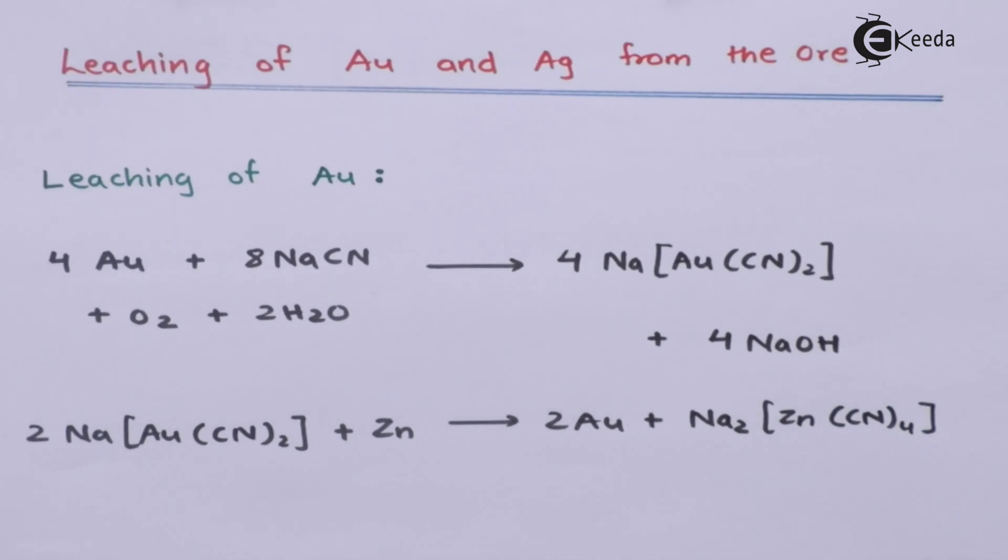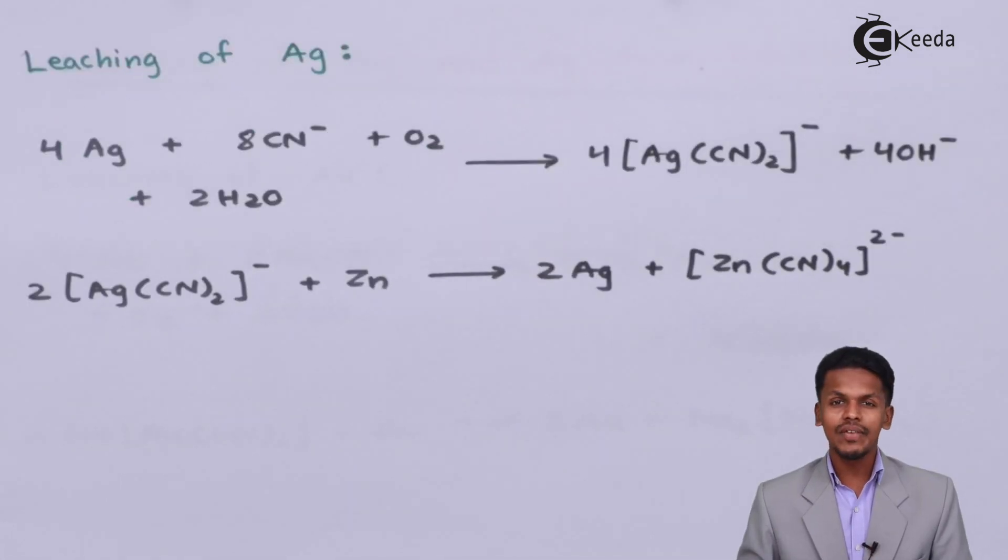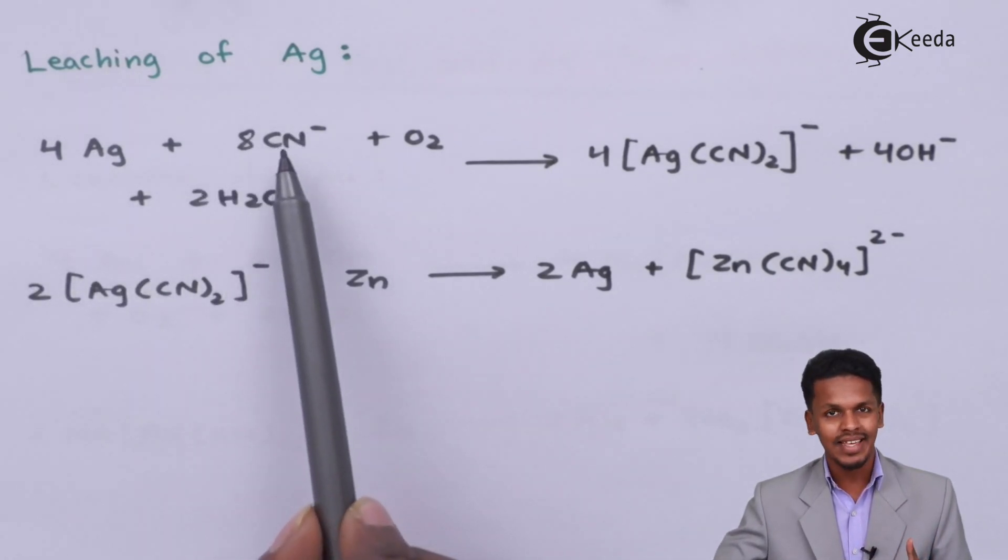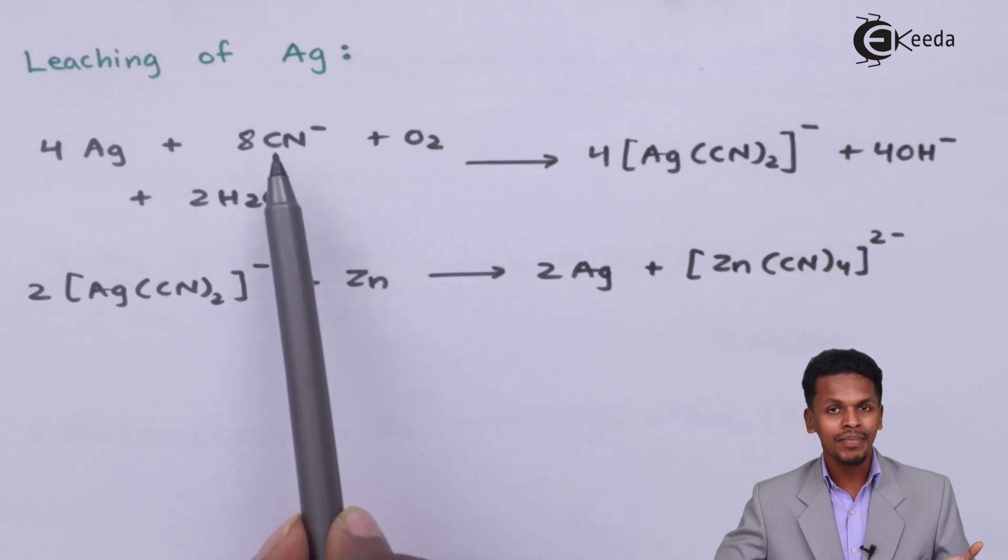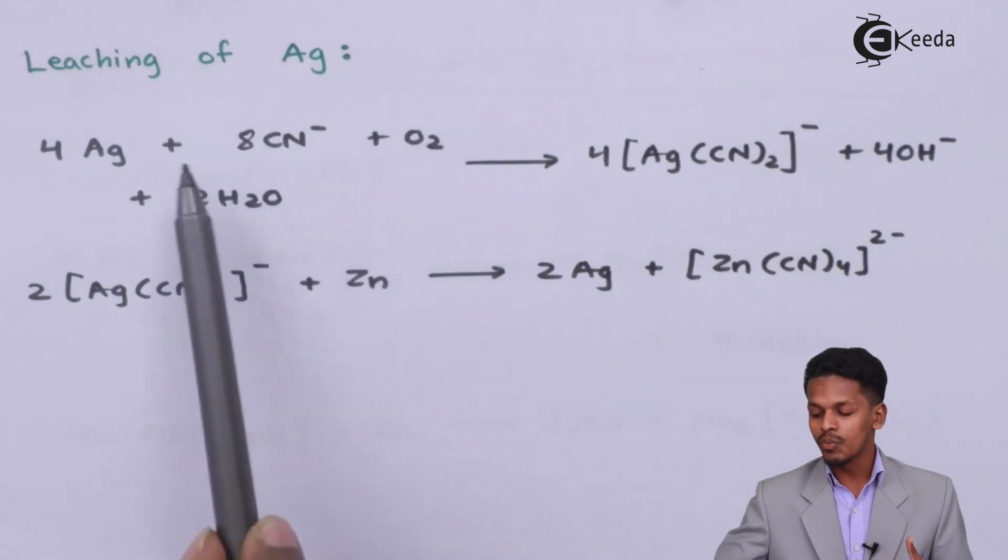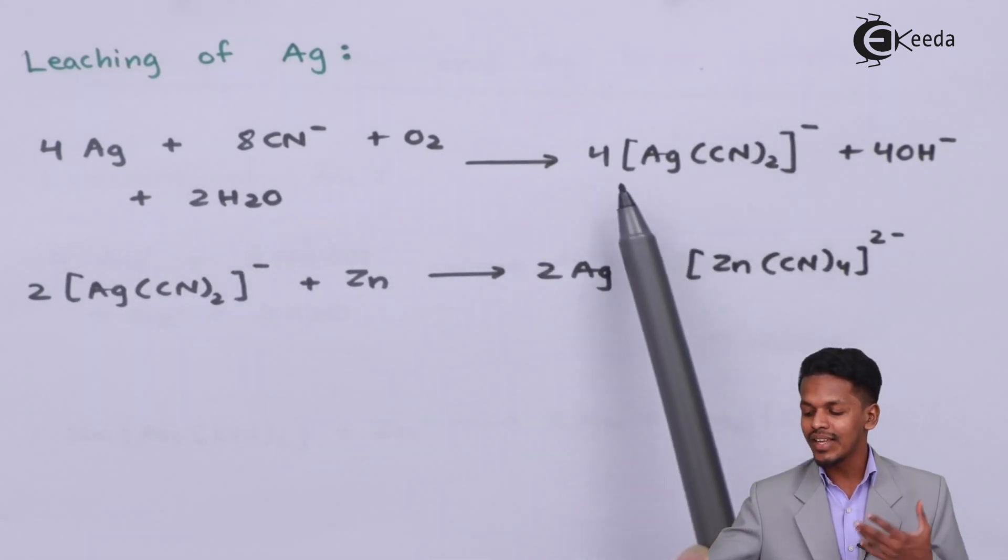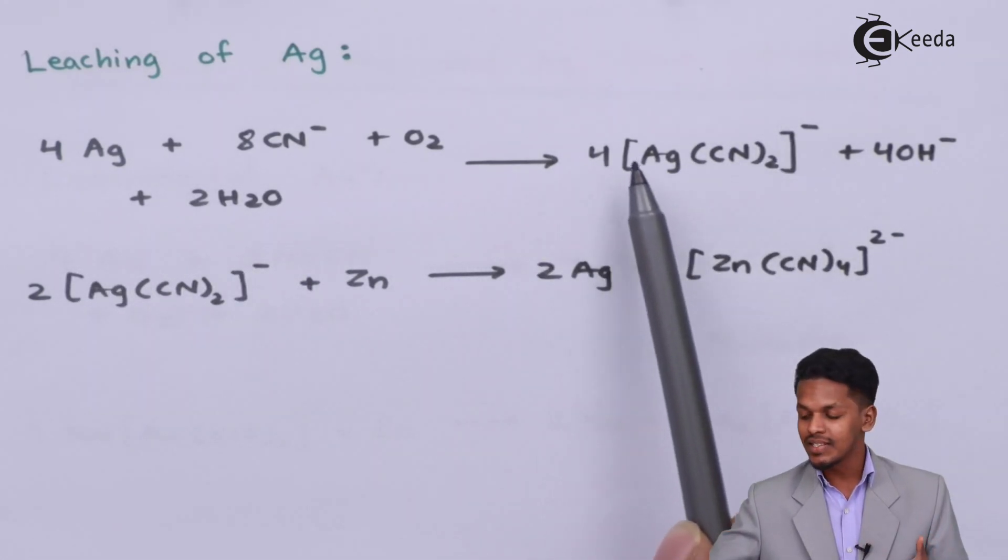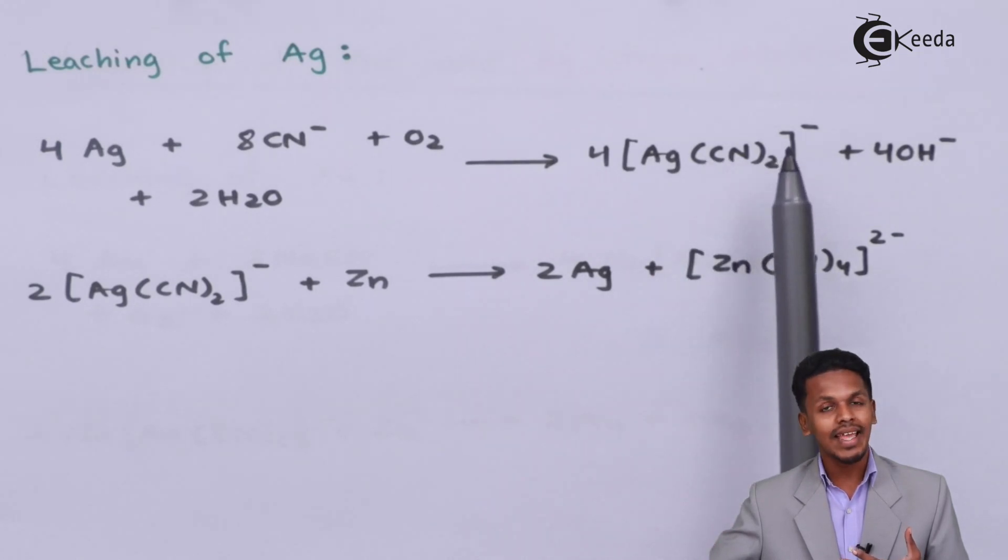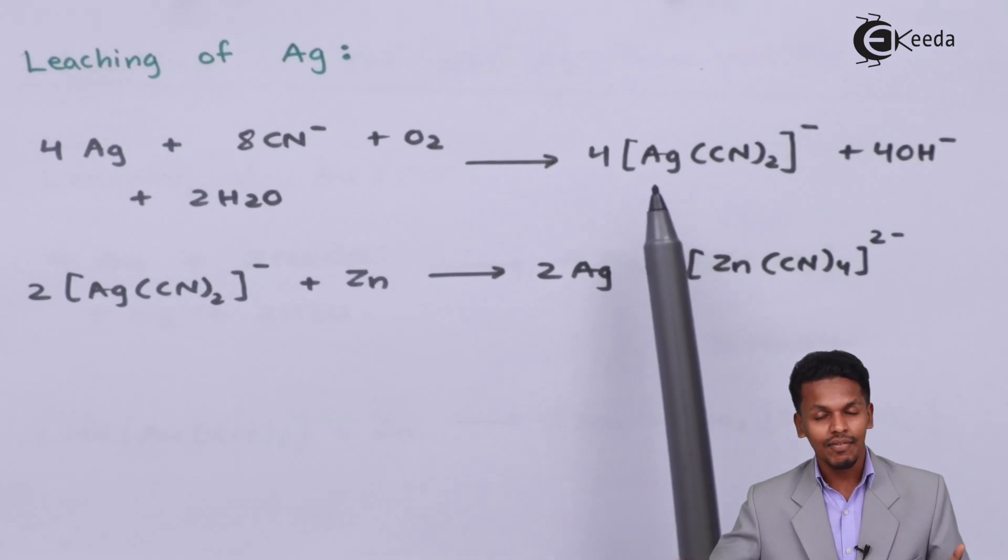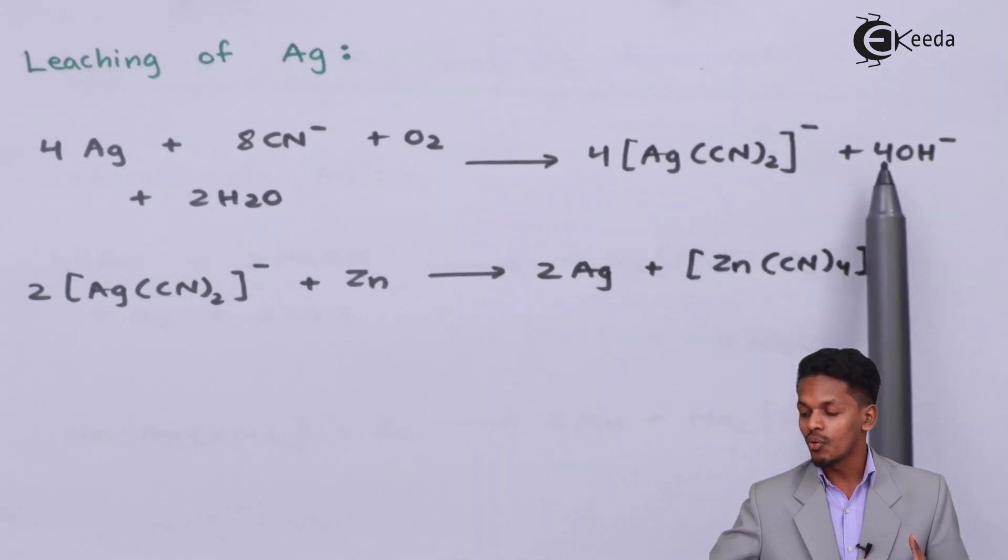Now this was related to the leaching of gold, and now let me talk about leaching of silver. Leaching of silver is also very much similar to that of the leaching of gold. In this case, 4 moles of silver is treated with 8 moles of CN- (from sodium cyanide) along with oxygen and 2 moles of H2O. There will be formation of a complex, Ag(CN)2-, known as a silver complex, along with 4 moles of OH-.